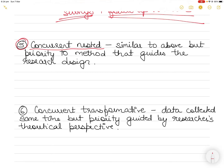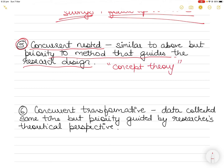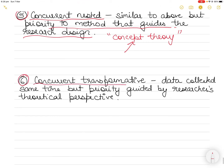In the concurrent nested strategy, data is again collected simultaneously, but priority is given to the method that guides the overall research design. This strategy can be used to broaden understanding of a phenomenon by using more than one method. It has potential for researchers but should be used with care, as many research decisions must be justified. For instance, if you have a novel concept or theory, both quantitative and qualitative methods can be used to verify that theory to examiners or readers.